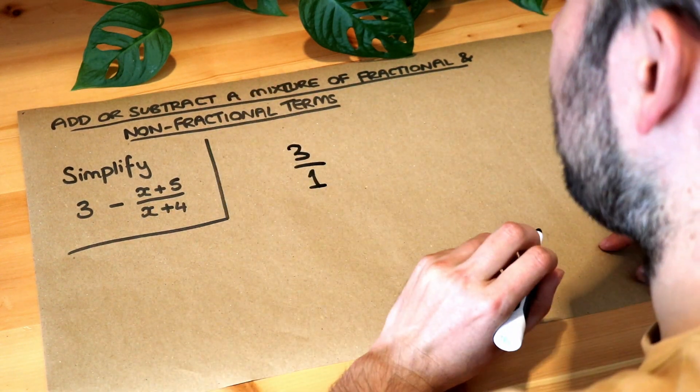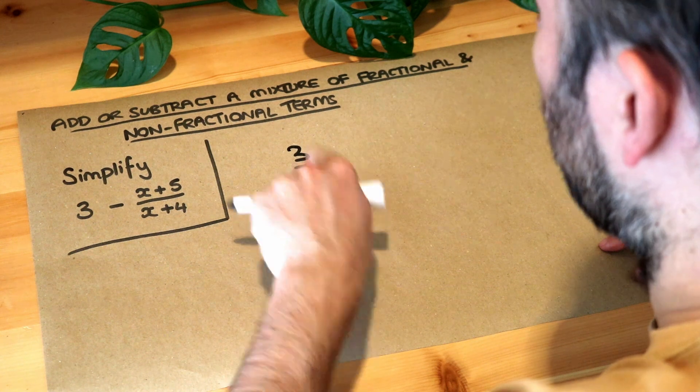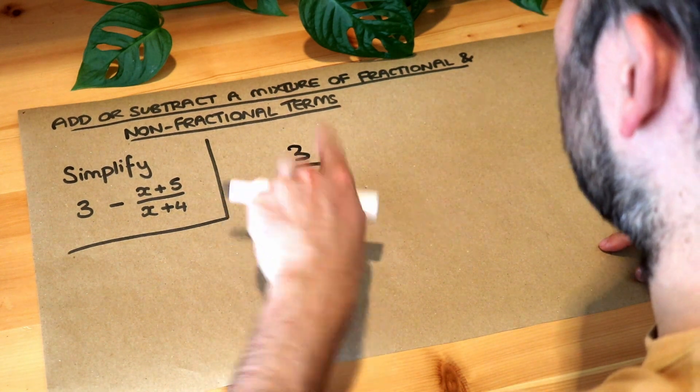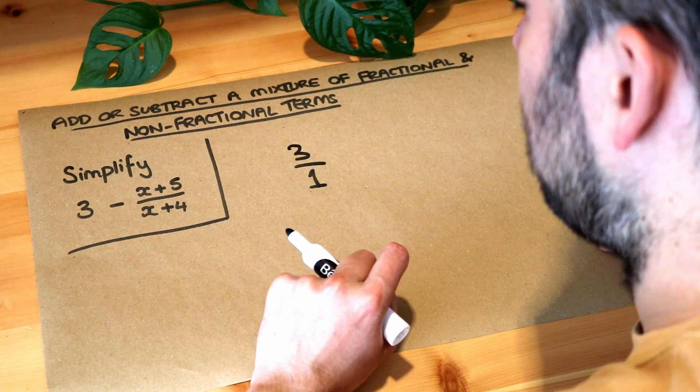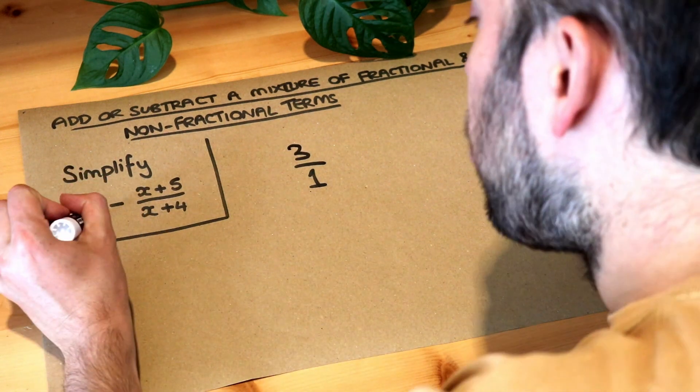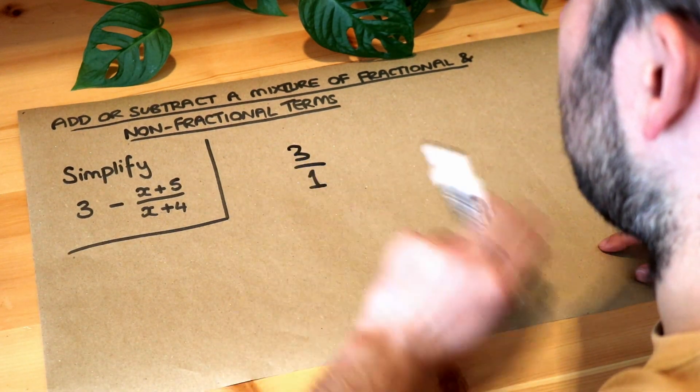Because now I've written it as a fraction and clearly three over one, that's the same as three divided by one, three divided by one is three. So if you have a non-fractional term like three, just put it over one, just write it over one.